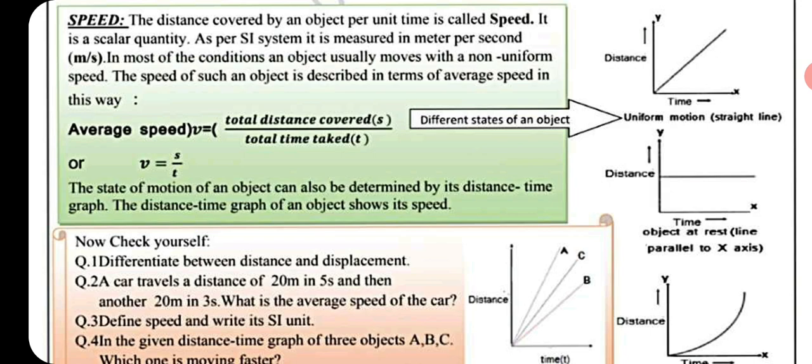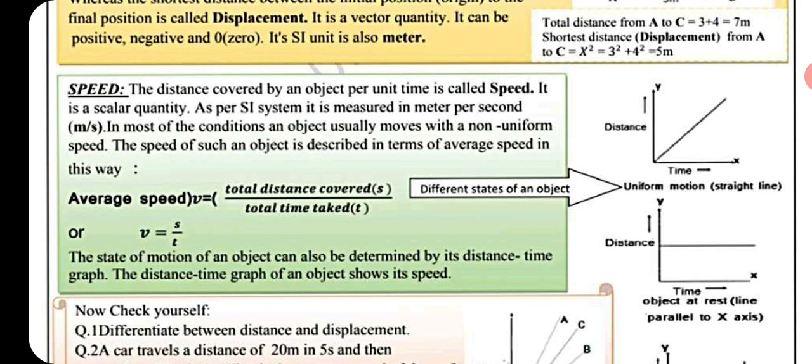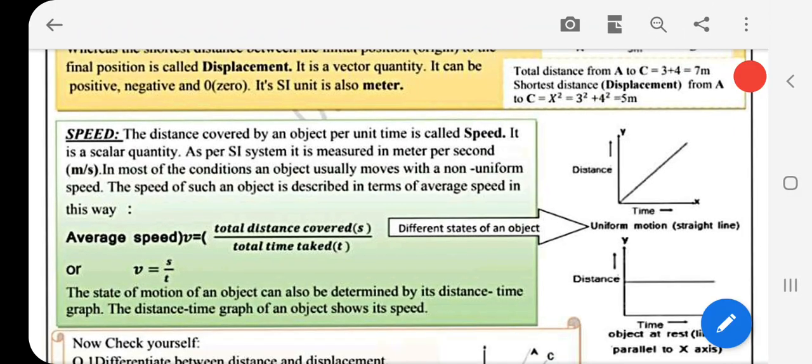The distance-time graph of an object shows its speed. You can observe this in the distance-time graph provided.